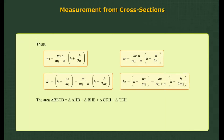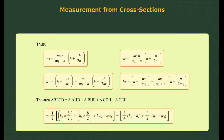The area A is the sum of the component triangular areas within the cross section, including areas AHD, BHE, CDH, CEH, and EH.